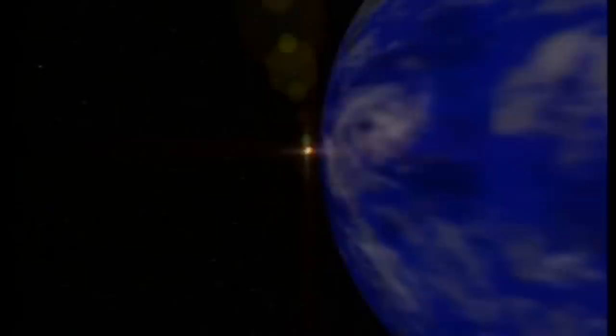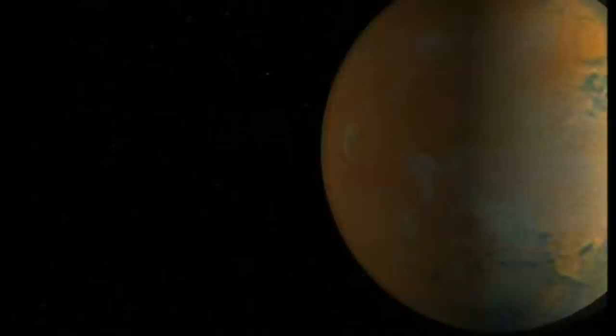Notre Terre n'est qu'à 150 millions de kilomètres du Soleil. Il faut dépasser Mars, la dernière des planètes rocheuses, puis traverser l'immense fossé qui nous sépare de Jupiter. Saturne est encore au-delà.